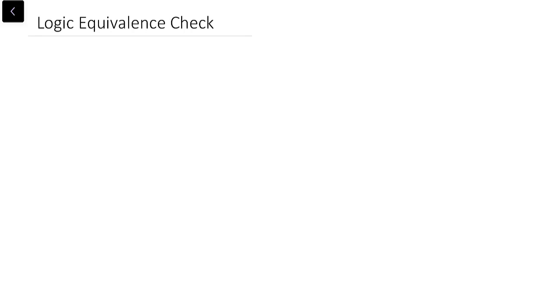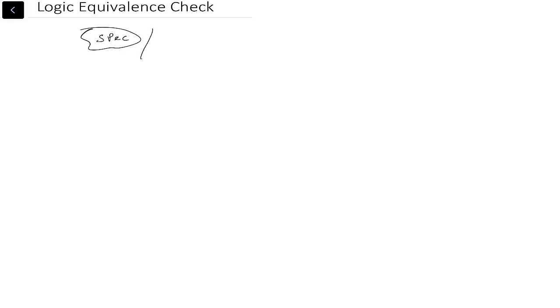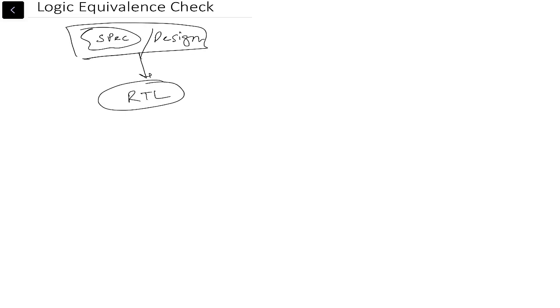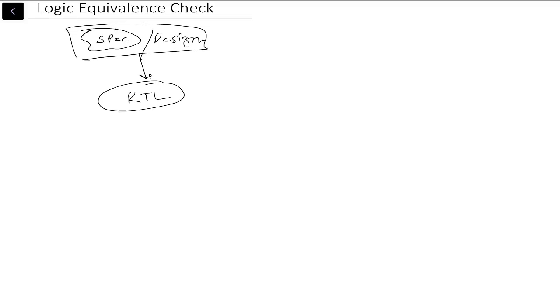The ASIC design flow starts with some sort of spec — your design spec or design concept. This is converted to RTL code. So you have some spec; let's say you want to design one mux. So this is your design — you will have two inputs, one output, one select line, and this is your design.